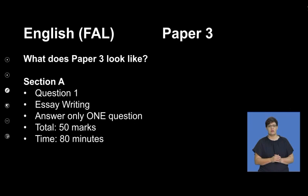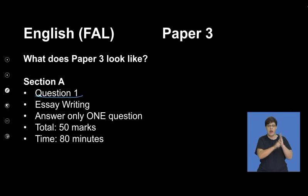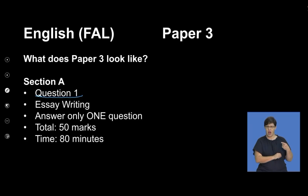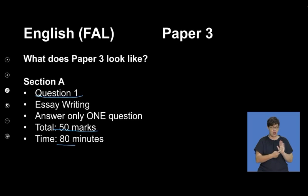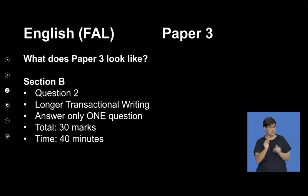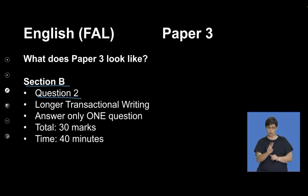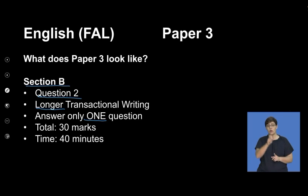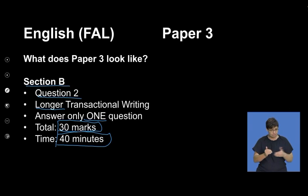Section A is question 1. In question 1 you will have to write an essay — just one question. You will be provided with many questions based on essay type writing. Your total for this section is 50 marks, allocated 80 minutes if you manage your time effectively. Then question 2, which is part of section B, is your longer transactional writing. You only need to answer one question. It's 30 marks for this section and 40 minutes if you manage your time appropriately.